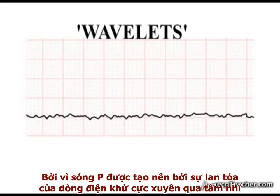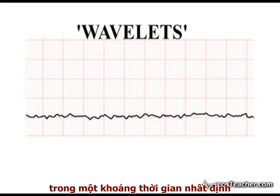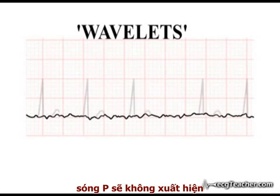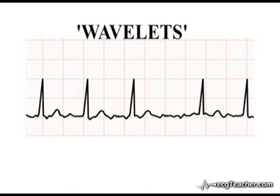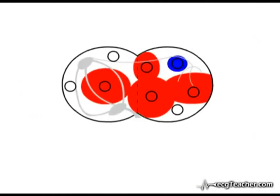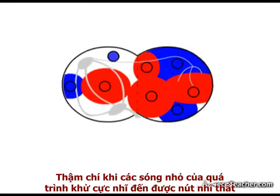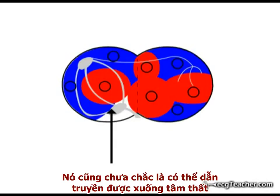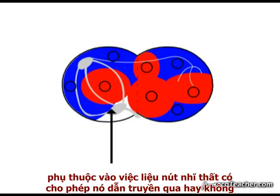As P-waves are generated by the coordinated spread of depolarization over the atria in a defined period of time from a discrete depolarizing focus, in the presence of atrial fibrillation, P-waves are absent. Even if a depolarization wavelet reaches the AV node, it may or may not be transmitted into the ventricles, depending on whether the node is permissive or refractory to transmission.